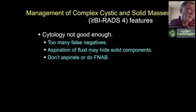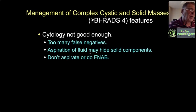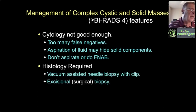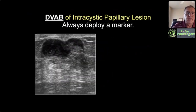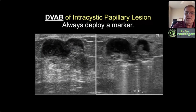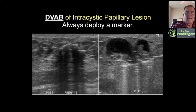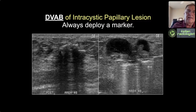Once you decide a complex cystic and solid mass is suspicious for papillary carcinoma, cyst aspiration and cytology is not the right approach. An 18-gauge or even 14-gauge core biopsy isn't ideal either. For complex cystic and solid masses, you need histology—best done with vacuum-assisted biopsy to take the whole thing out and have the pathologist serially section the entire specimen. Here's a complex cystic and solid mass we considered suspicious, with a vacuum probe. We take everything out until we get to the front wall of the cyst, then always deploy a marker in case atypia or malignancy requires re-excision.